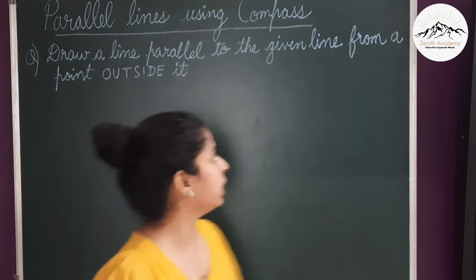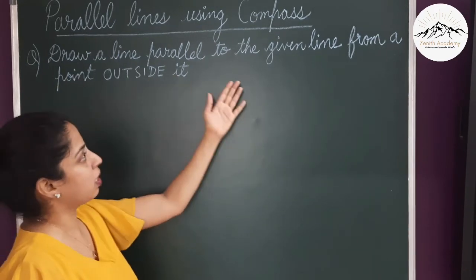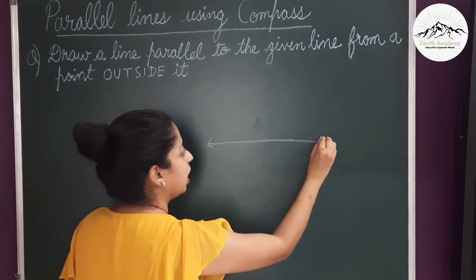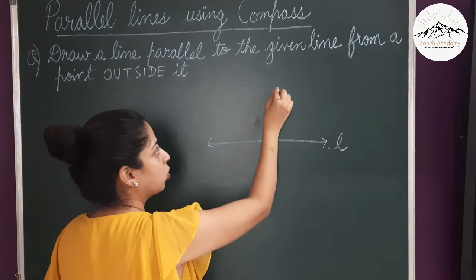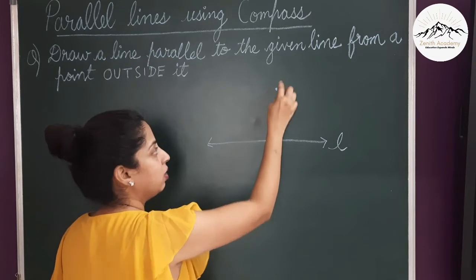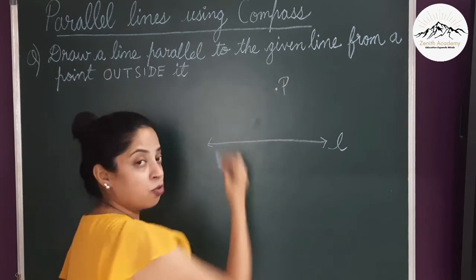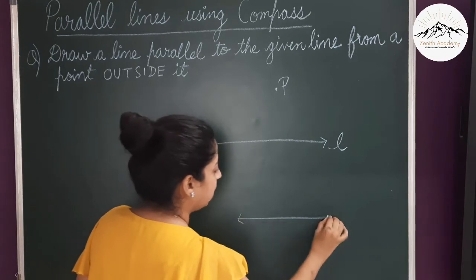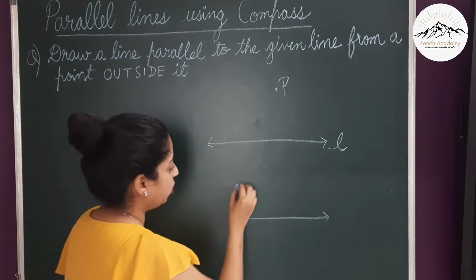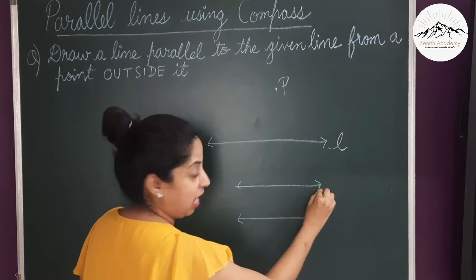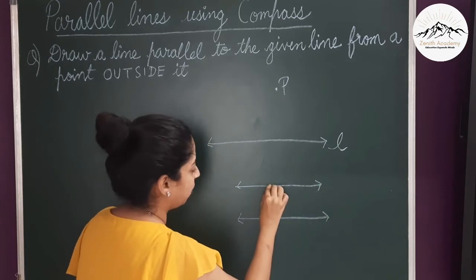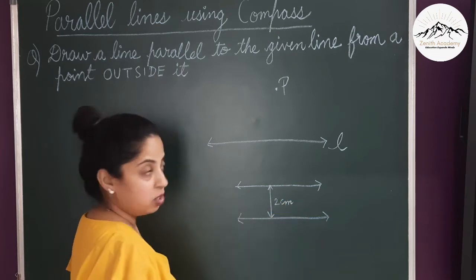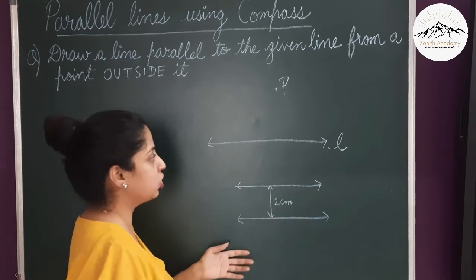Now children there are two ways. One is to draw a line parallel to the given line from a point outside it. So suppose this is a line L and we have to draw a parallel line from a point P which is outside it. There is also another question where you have to draw a parallel line at a particular distance away from it, say two centimeters away. I will teach you both methods.